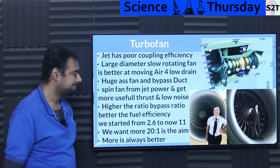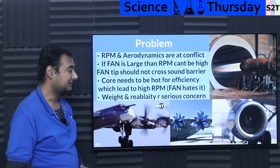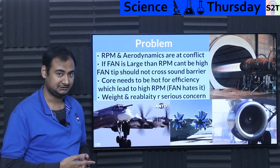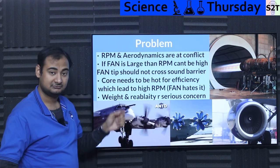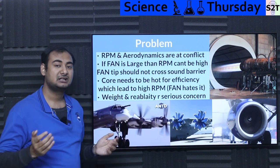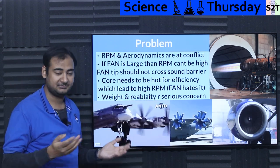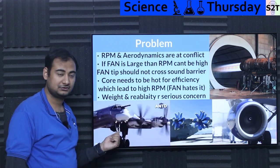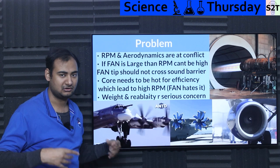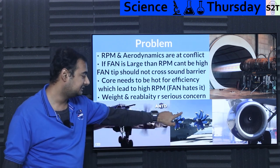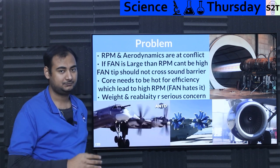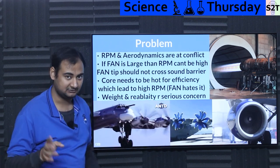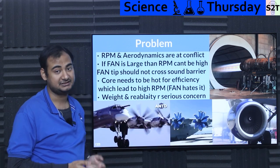Turbofan has an issue though. There are two factors working inside the engine that are in conflict: RPM and aerodynamics. A fan with large diameter, which you want for high bypass, does not like high RPM. Anything that goes large generally goes down in RPM — just like a very large wind turbine always rotates very slowly. If fans spin super fast, their tips will reach supersonic speed, creating shockwaves. You're then wasting a lot of energy, creating dirty air — it's noisy and you're wasting energy rather than moving forward.